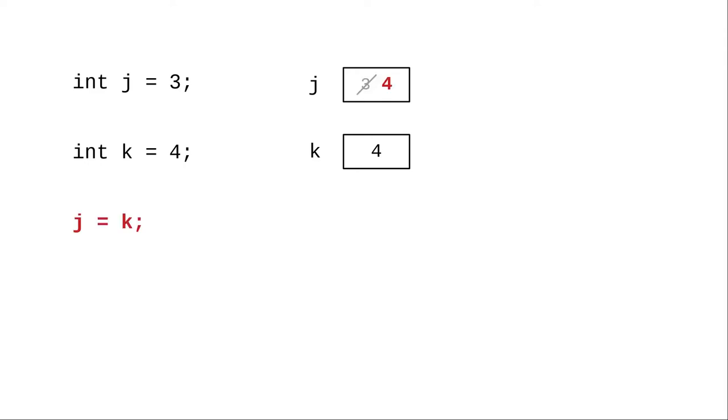When we do this assignment, j is assigned k, the current value of k is copied into j's memory area.